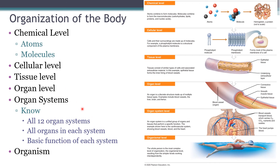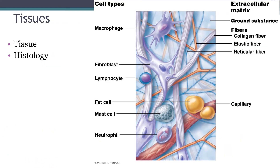These 12 organ systems make up you — the organism. I have a slide here showing tissues: you can see the cells and the stuff between cells, which is going to be ground substance and fibers — the extracellular matrix. We'll talk about that when we get to the histology section.